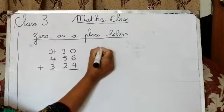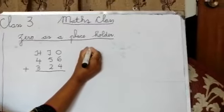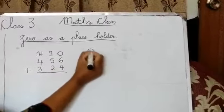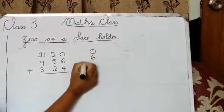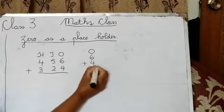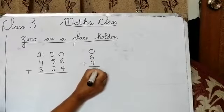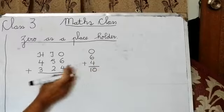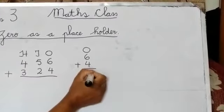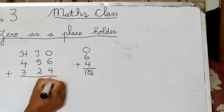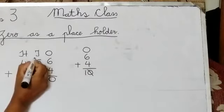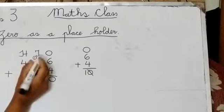The next step is we separate our ones. 6 plus 4. 6 plus 4 is 10. Can I put this full 10 here? No. So I will put only 0 here and this 1 should carry over to tens.